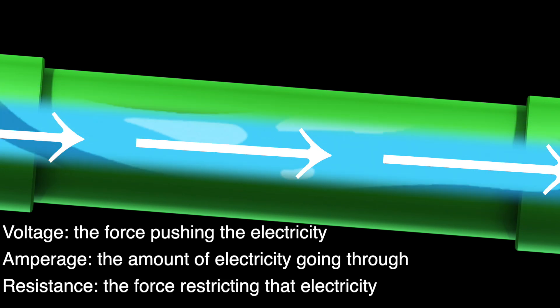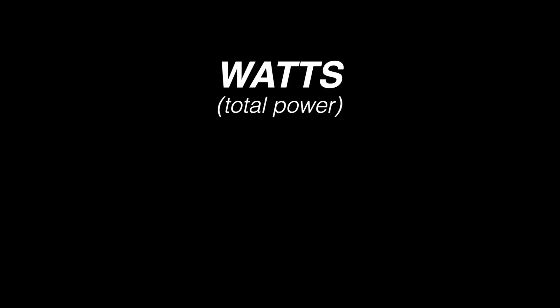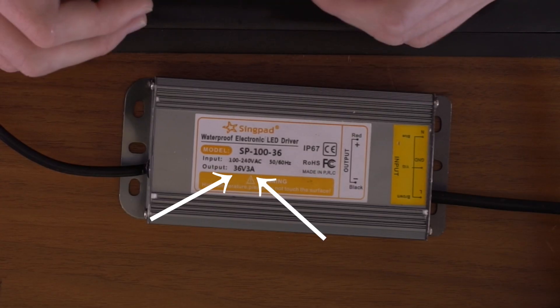We're not really going to talk about resistance a lot because in these small circuits there's not much resistance at all. One thing we will talk about though is wattage. Wattage is total power and is equal to volts times amps. An important thing to remember is power supplies have a voltage and an amperage rating, and therefore they have a wattage rating. When designing LED circuits, the power supply has to have enough wattage to power the chip fully.